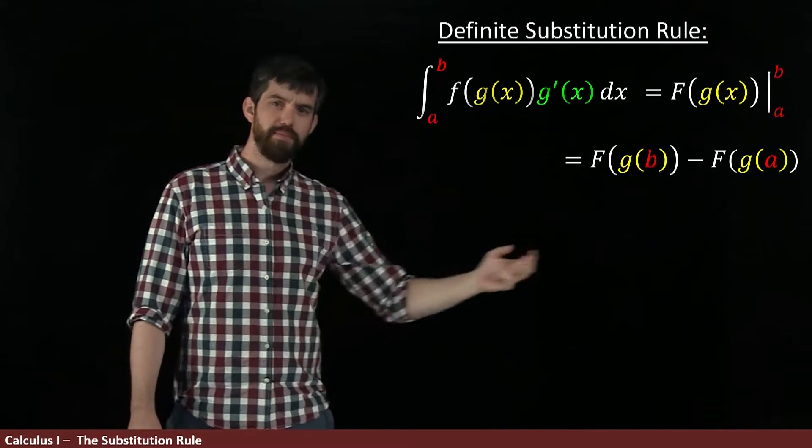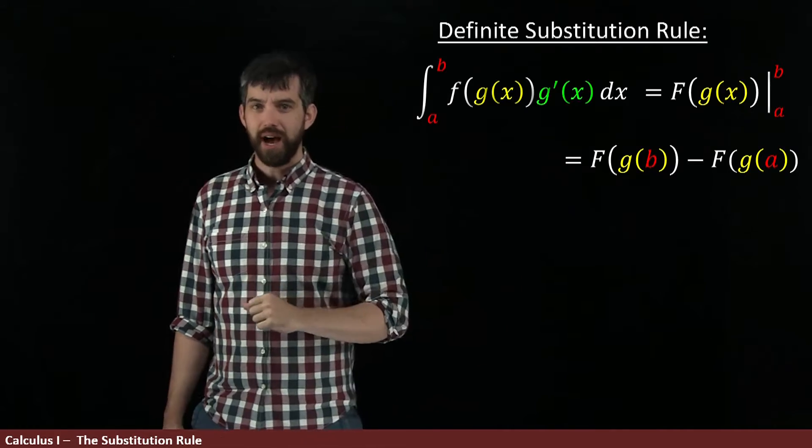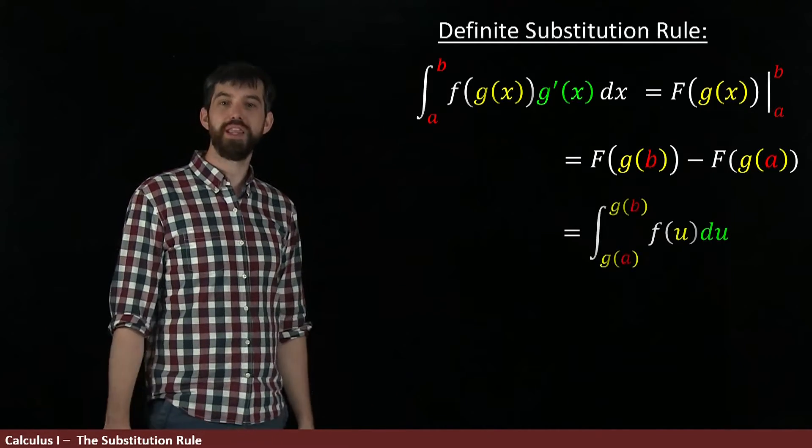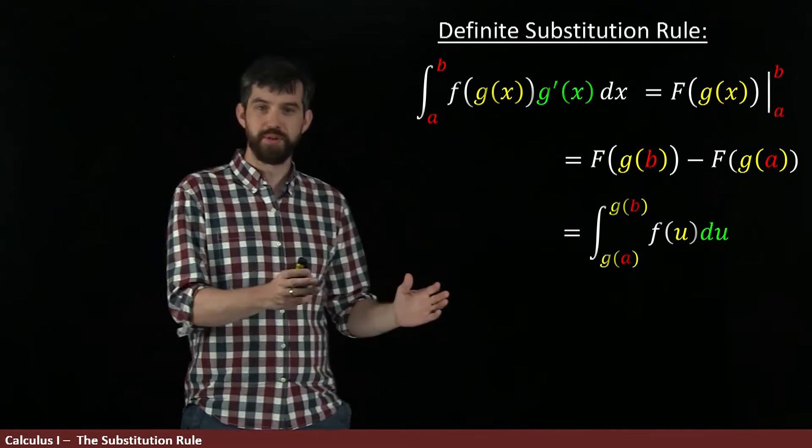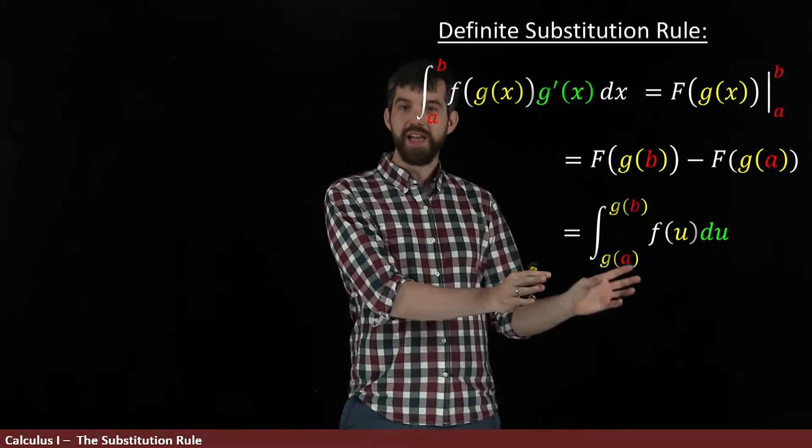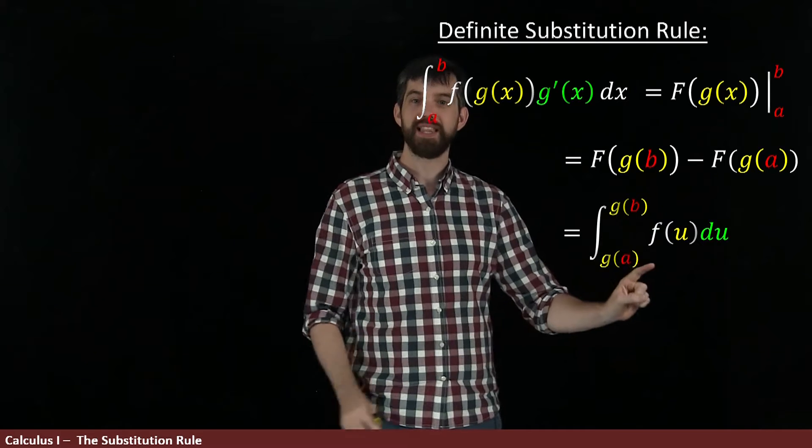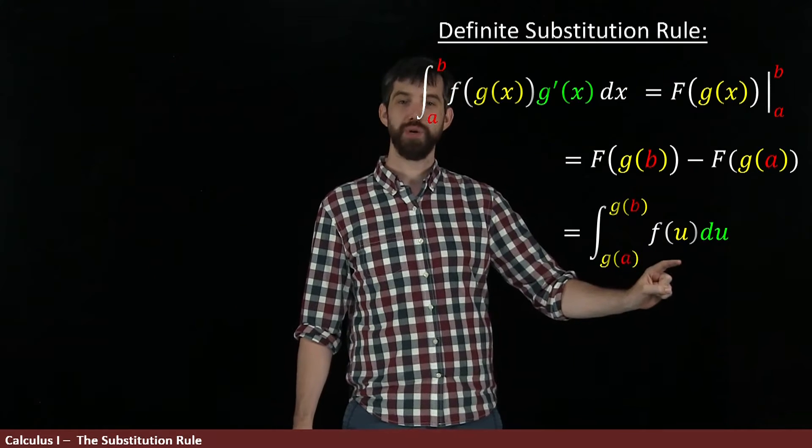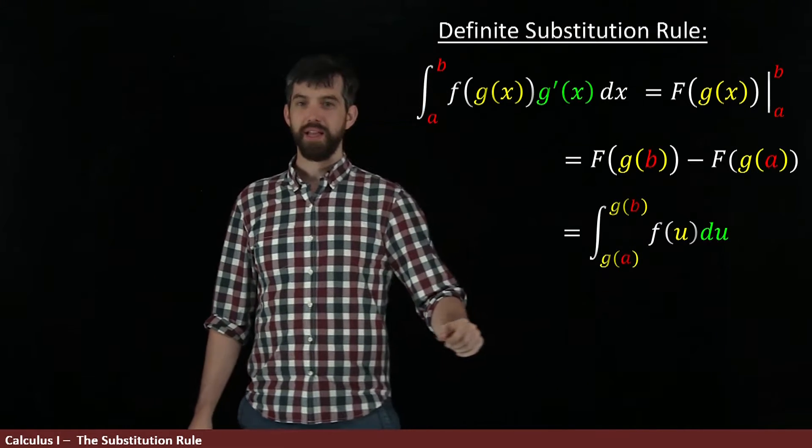However, I can manipulate this. I know what this is. I can write it in terms of u in the following way. This is going to be the definite integral between g of a and g of b where I take the little f evaluated at u, du.